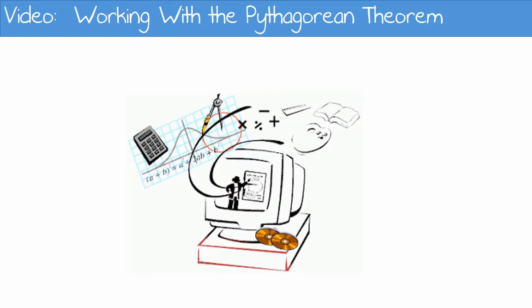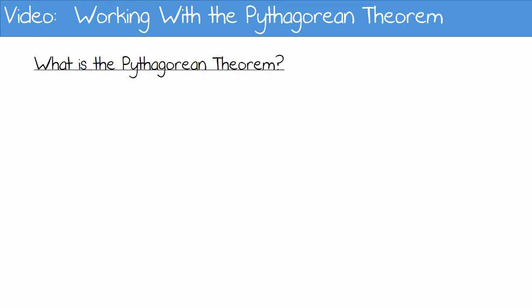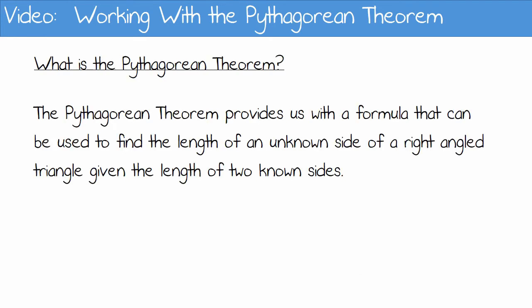Working with the Pythagorean Theorem. What is the Pythagorean Theorem? The Pythagorean Theorem provides us with a formula that can be used to find the length of an unknown side of a right-angled triangle given the length of two known sides.